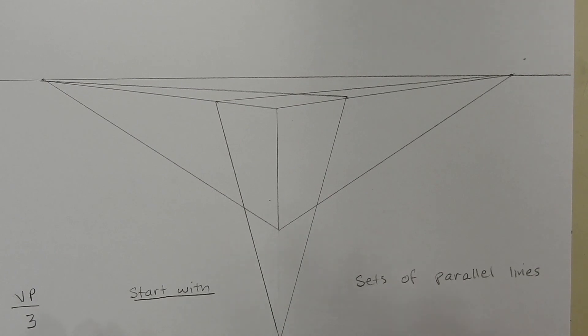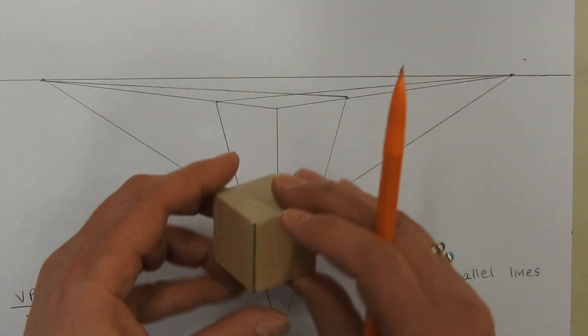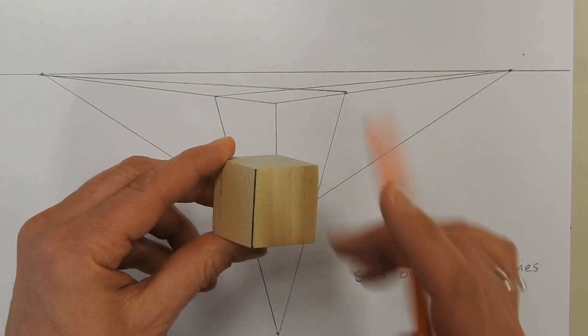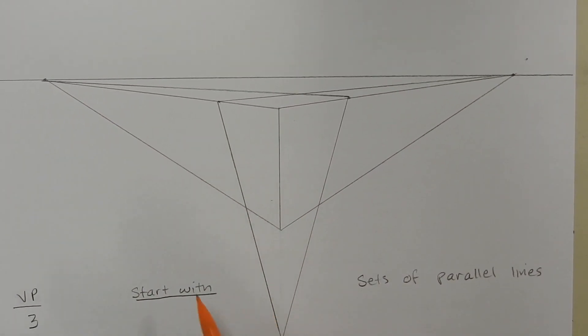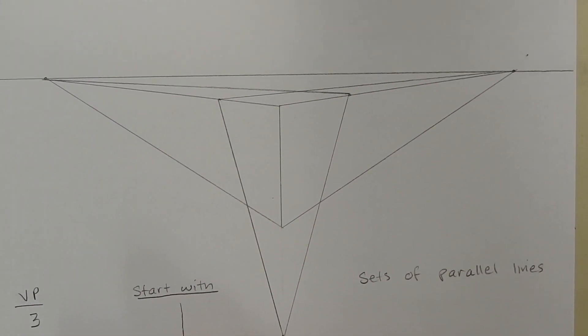For three point, you're going to start just like two point with that leading edge right there. So you'll start with a line.